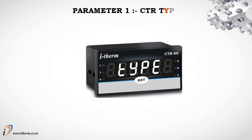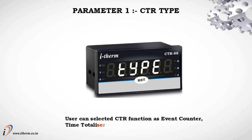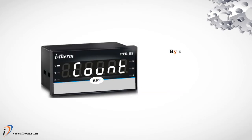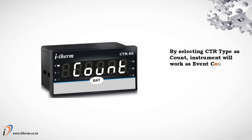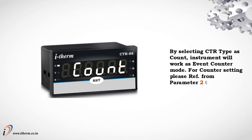Parameter 1: CTR type. The user can select CTR function as event counter, time totalizer, or RPM indicator using this parameter. By selecting CTR type as count, the instrument will work as event counter mode.